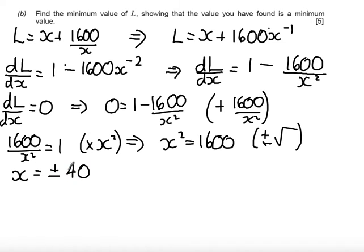Now, obviously I've got two solutions here, I'm looking for only one solution. As we're talking as a real world problem here, and x is a length in the fence, x can't possibly be a negative length. So in fact, x equals 40.